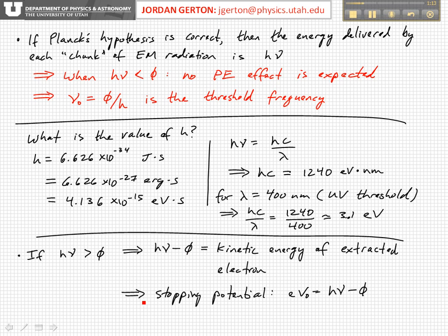So in particular, the stopping potential then is going to be given by the electron charge times the potential is equal to this difference, basically equal to the kinetic energy of the electron. And we can rewrite this as shown here.